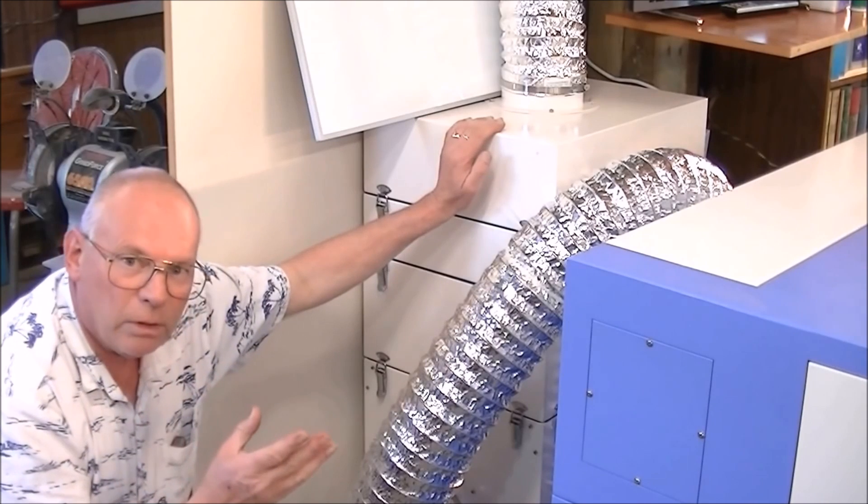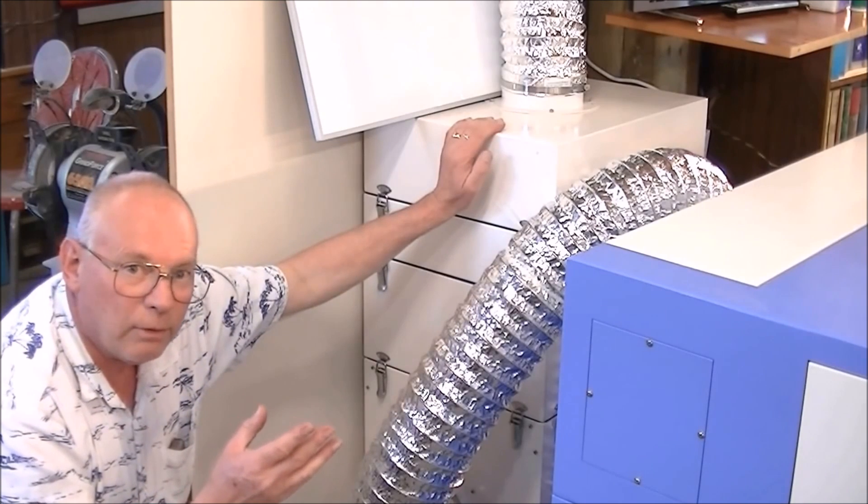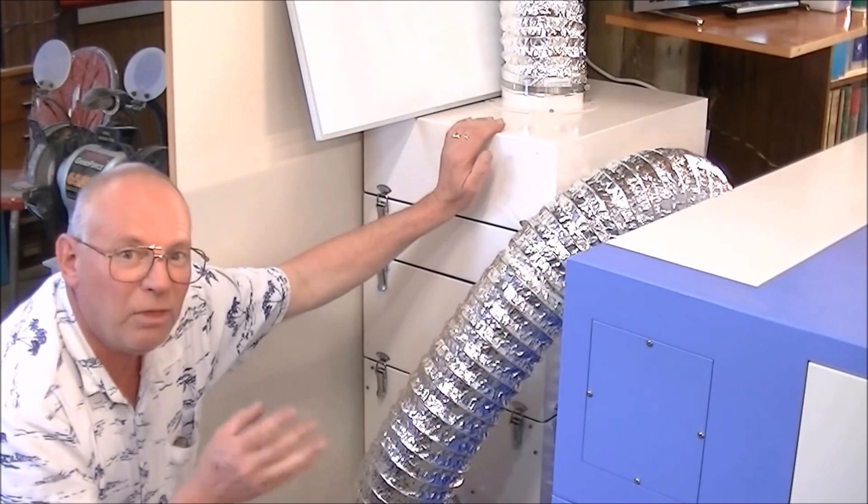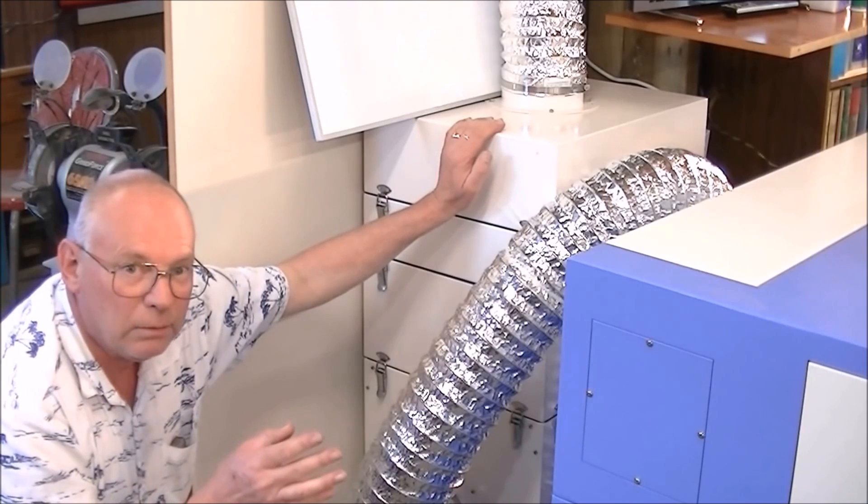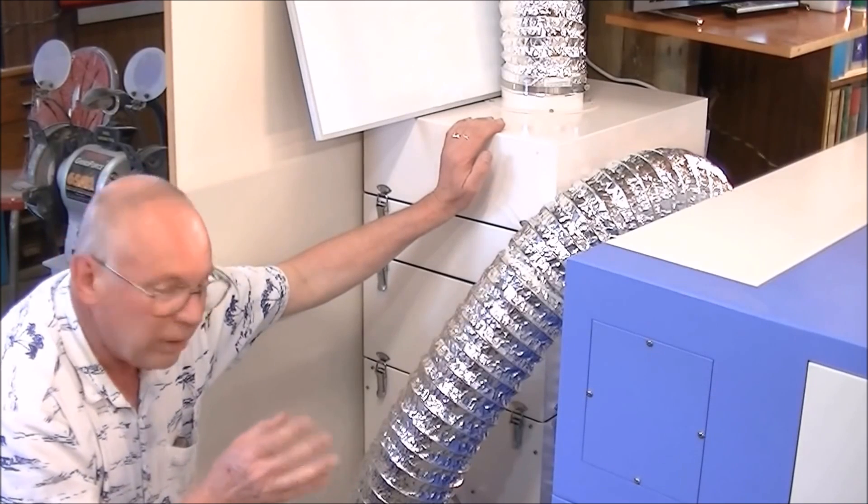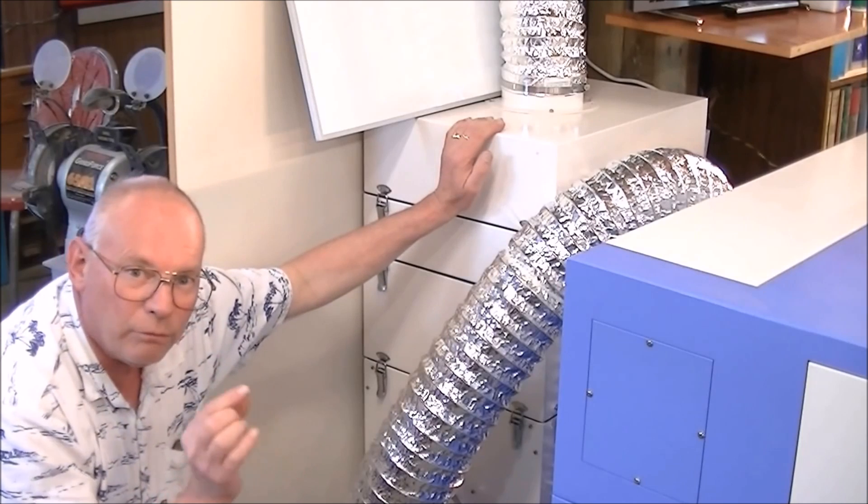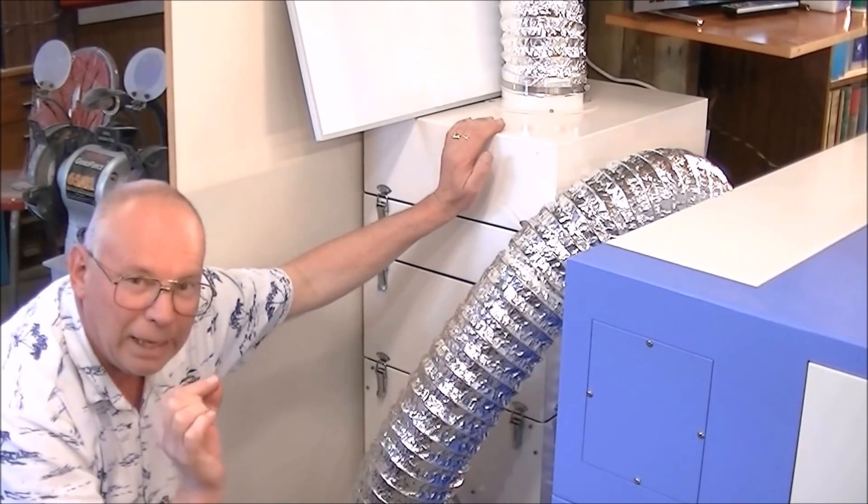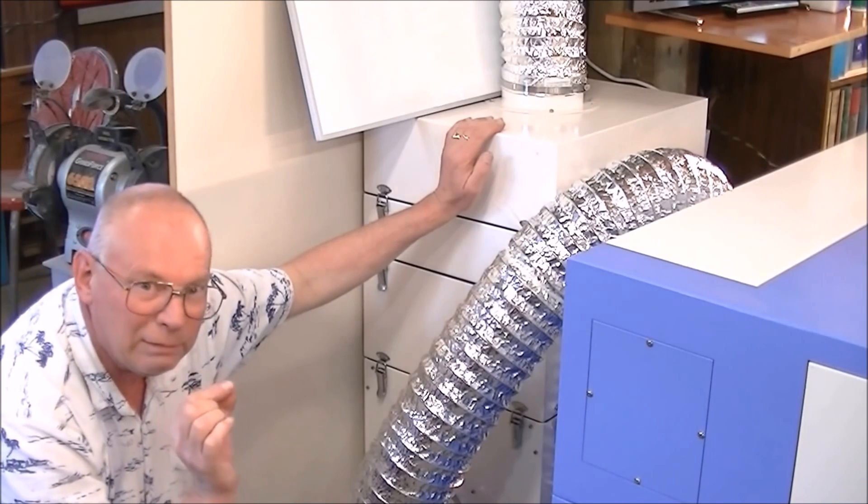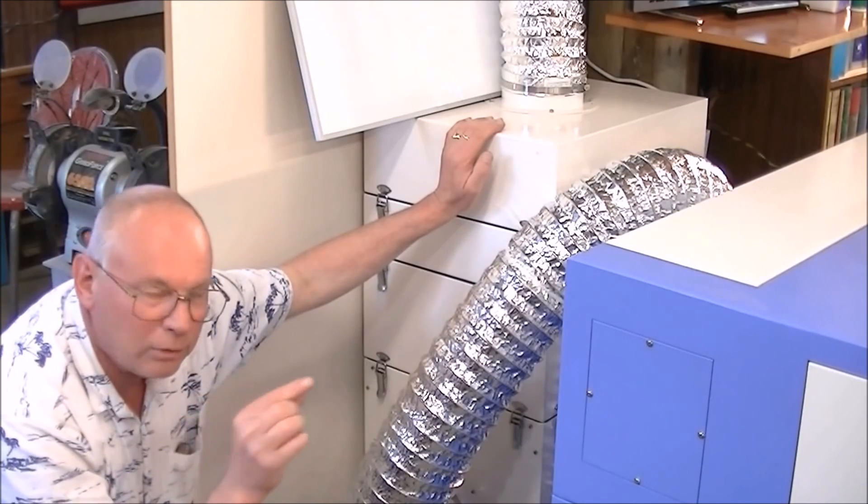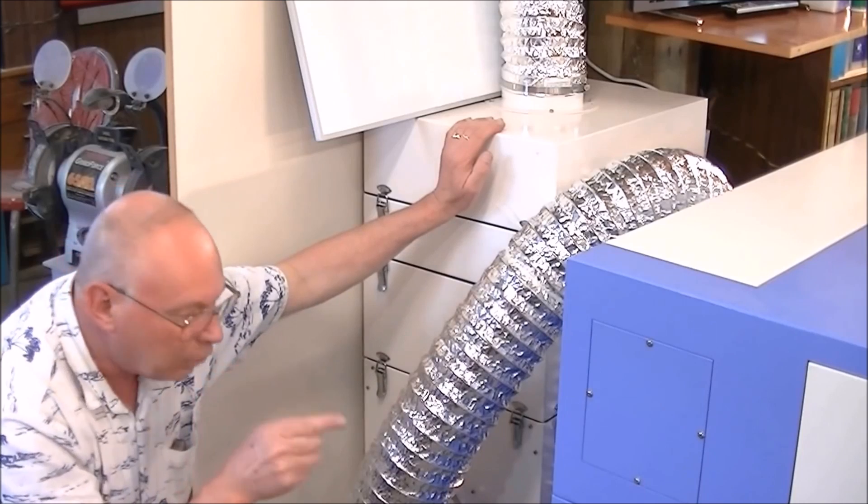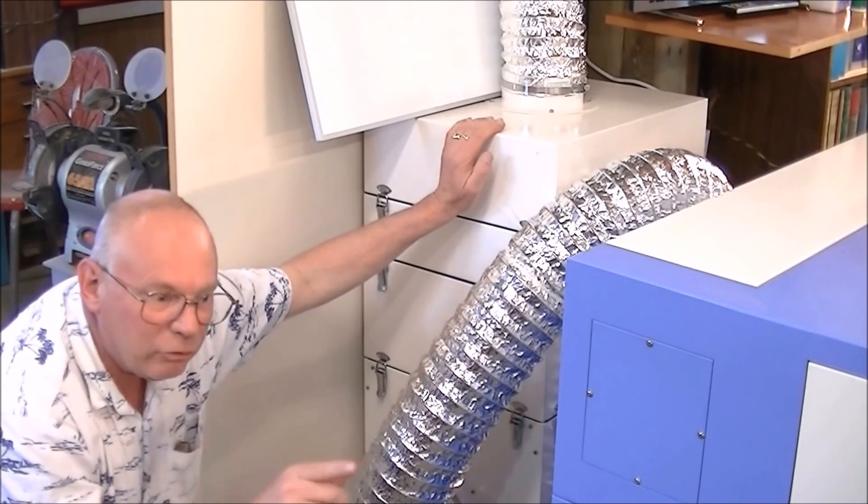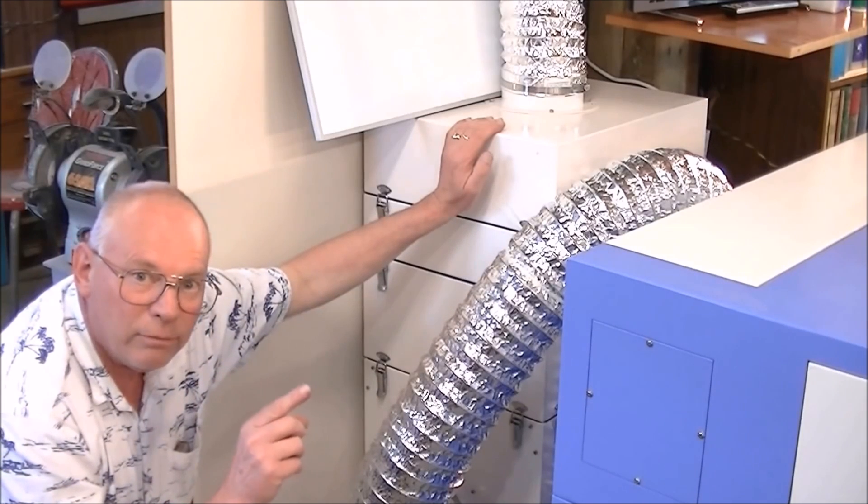A laser operates at upwards of 5,000 degrees C. That is the temperature of the actual pinpoint or hair of light that comes out of the end of that nozzle to cut or etch or engrave material. It evaporates the material that it comes into contact with. That means it turns it to gas.